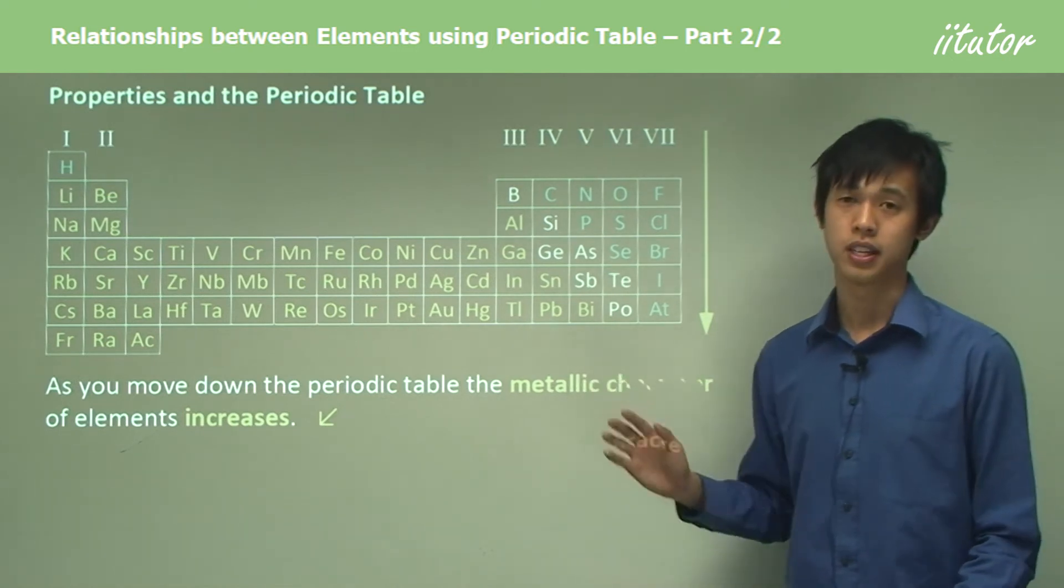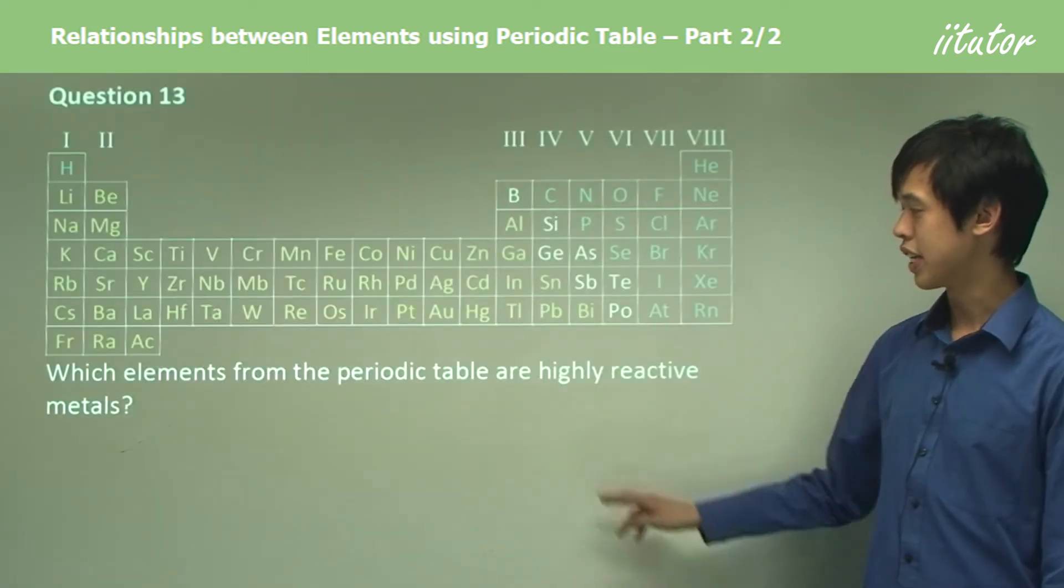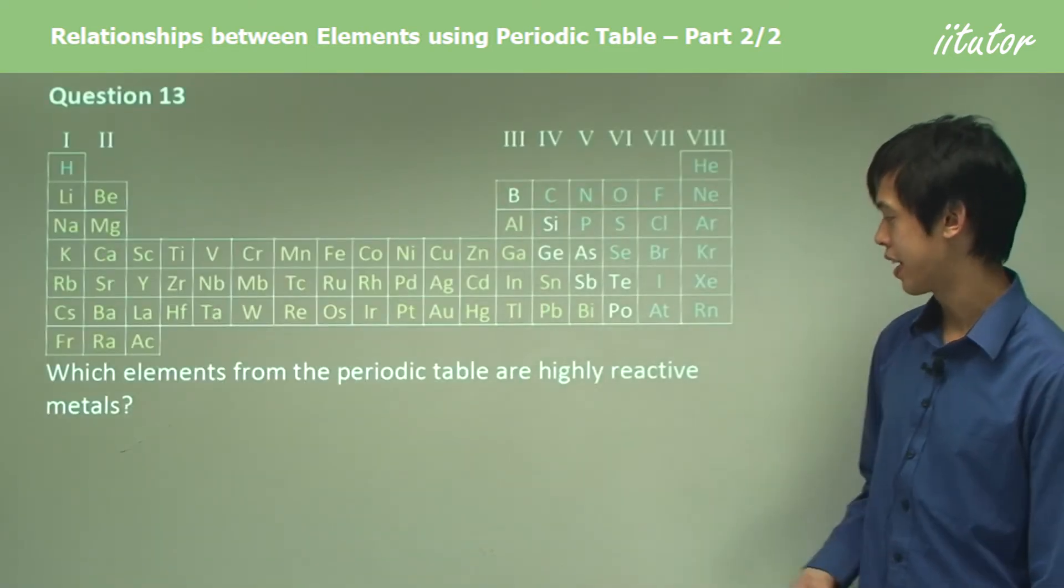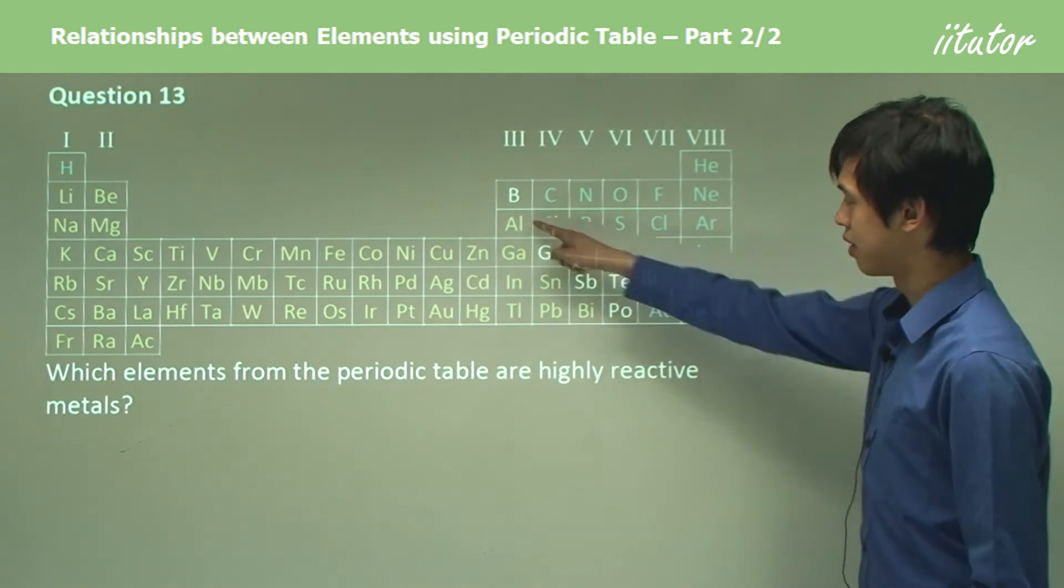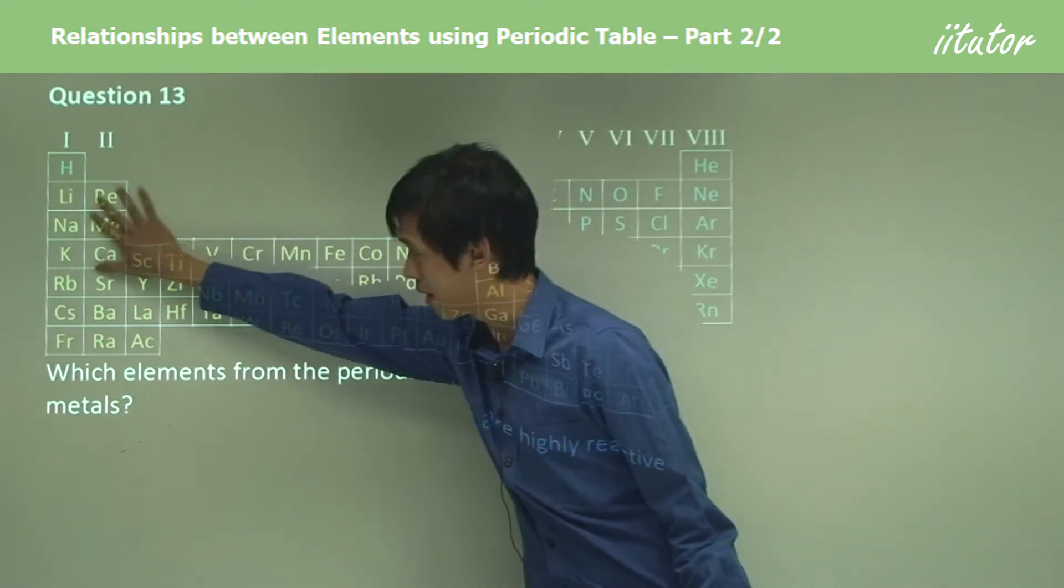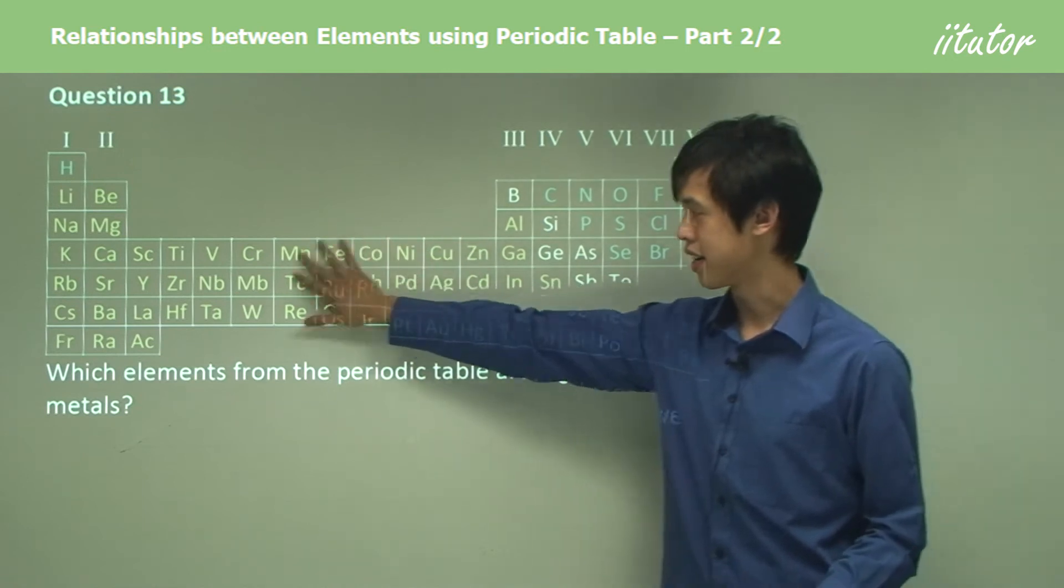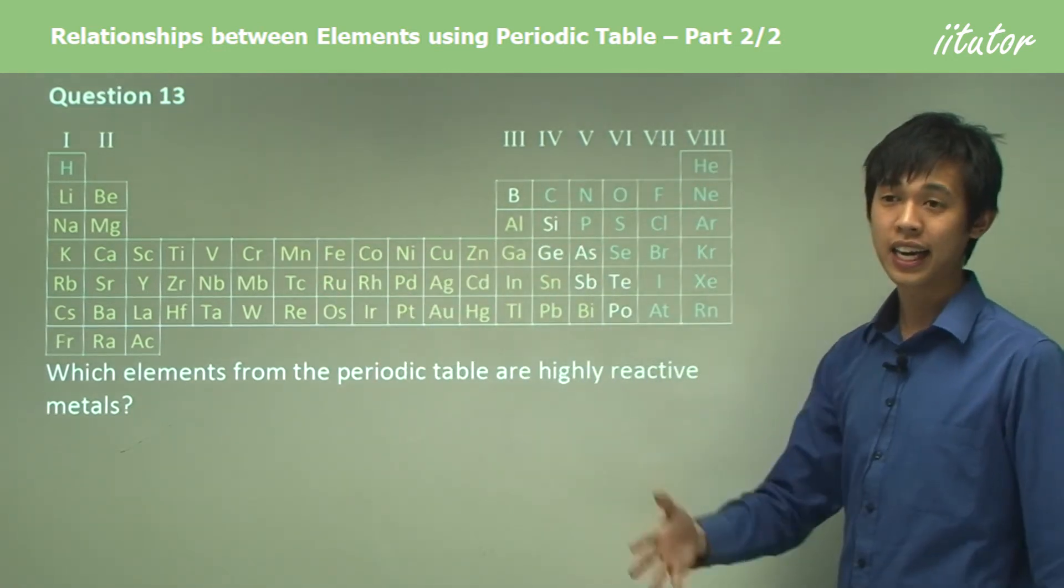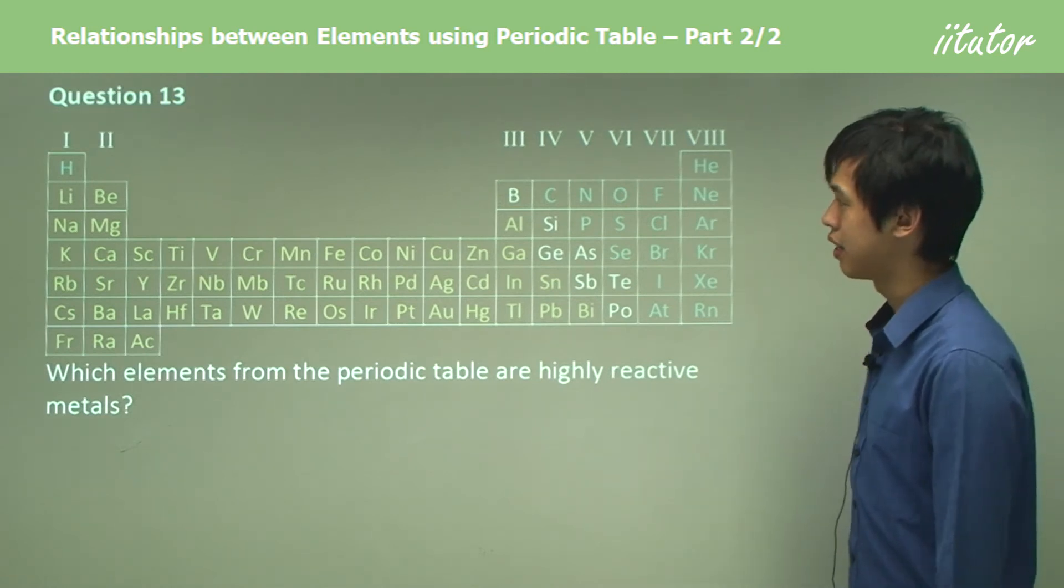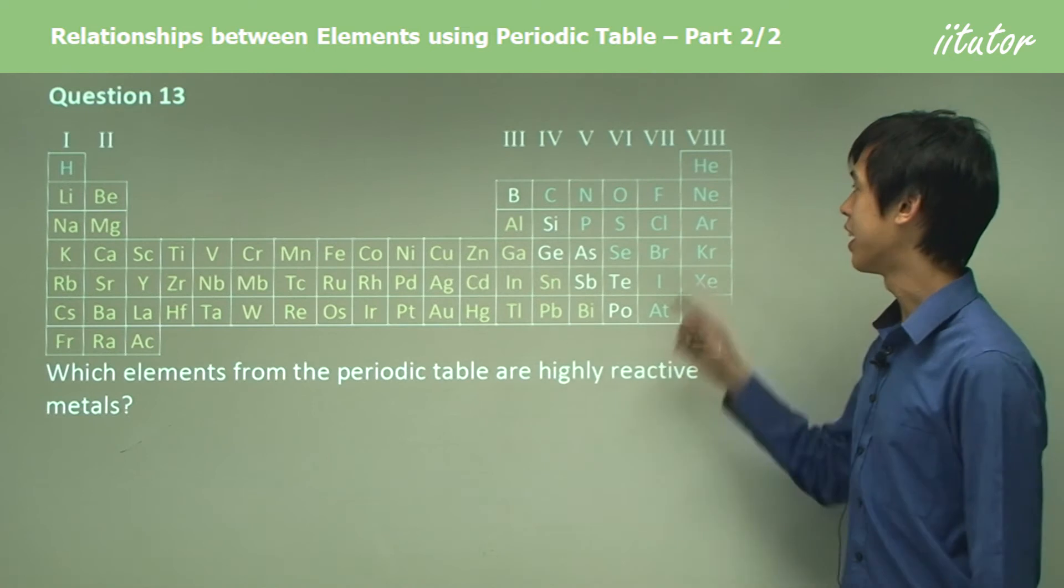Now, which elements from the periodic table are highly reactive metals? From what we talked about, where do we find metals? Well, it's all these yellow ones, so it's somewhere here. That doesn't help us too much, but it helps us a little bit. At least we know that it's not this section.